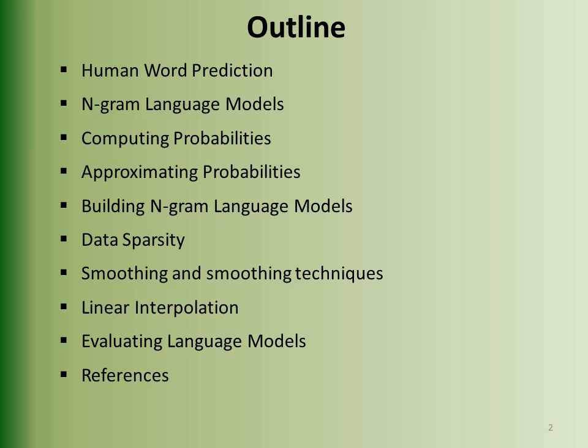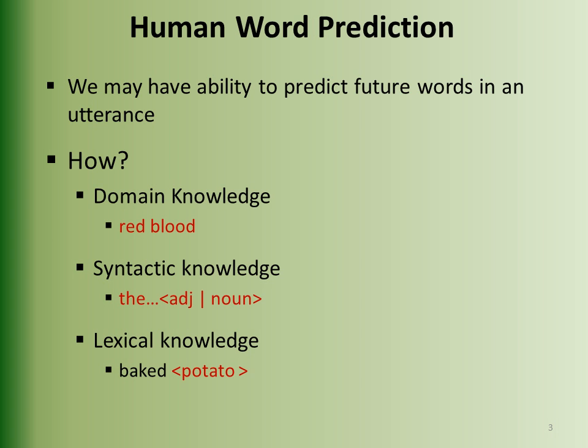Here is the outline of my presentation. Human Word Prediction — we may have the ability to predict future words in an utterance. An utterance is the smallest unit of speech to express your ideas or feelings in spoken words. We can express it using domain knowledge, syntactic knowledge, and lexical knowledge.